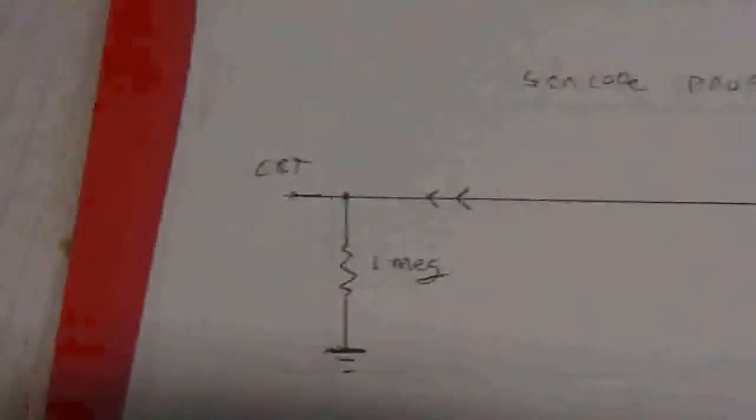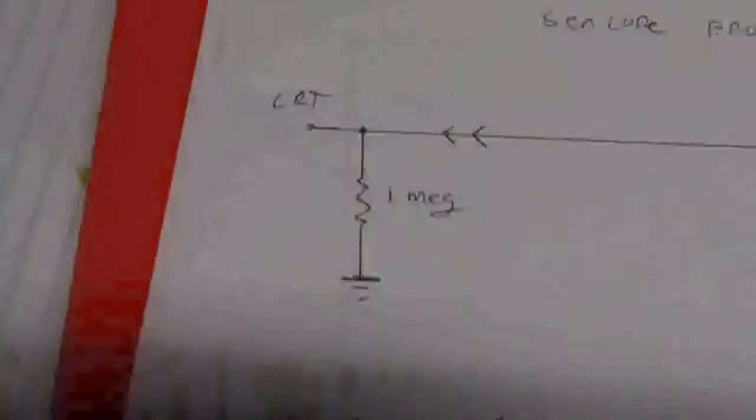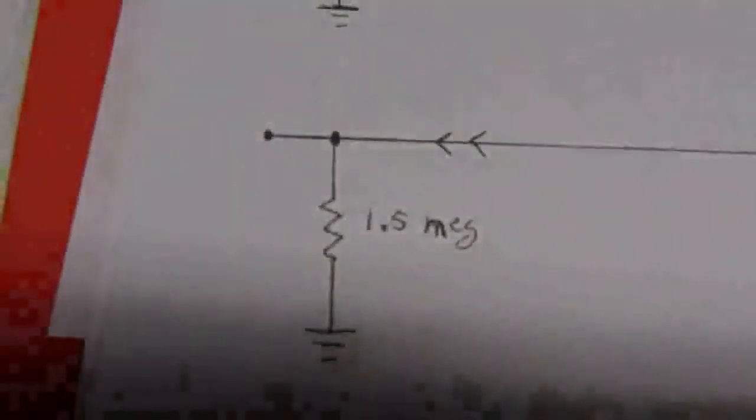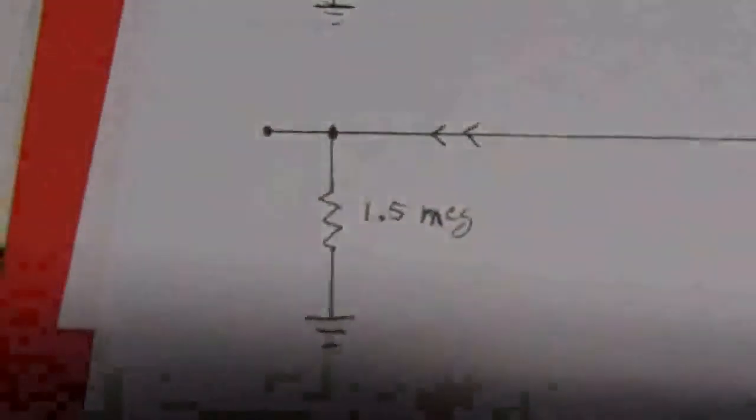However, when it's hooked up to the AC side with the megaohm resistance in there, it throws the DC voltages off. So I had to go back and redesign it.